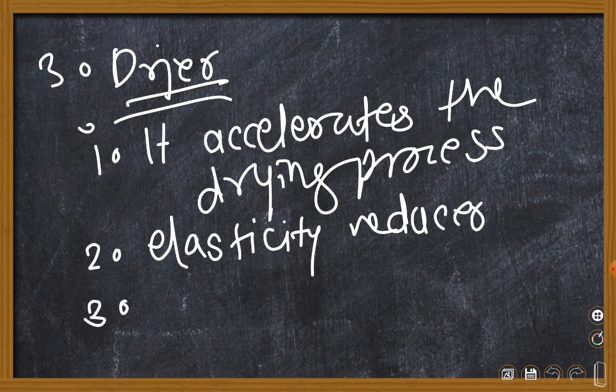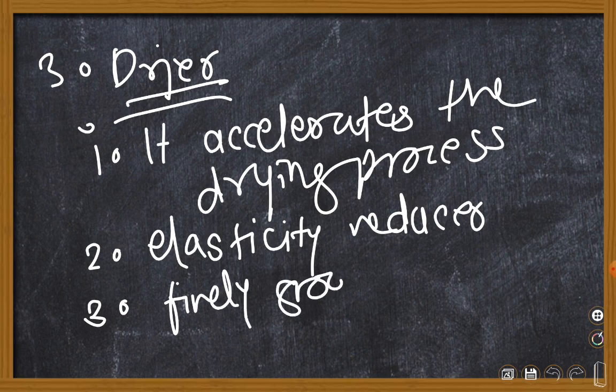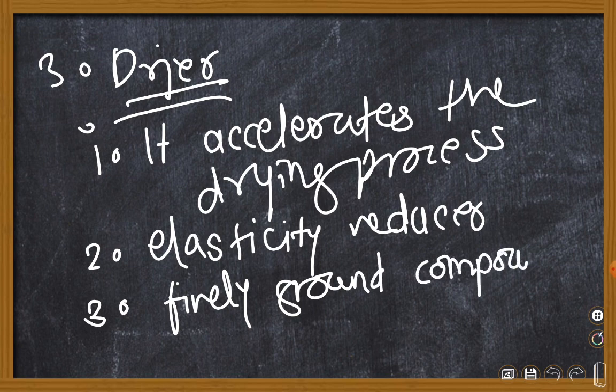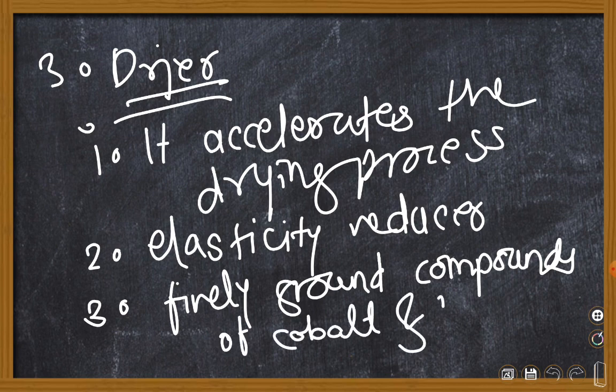Example for a dryer is finely ground compounds of cobalt and lead. This was dryer - it accelerates the process of drying by reducing the elasticity of the paint.